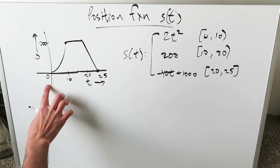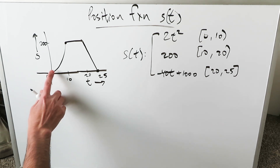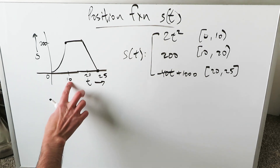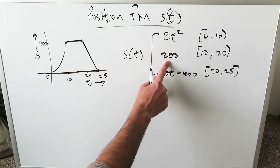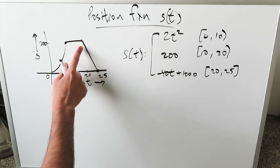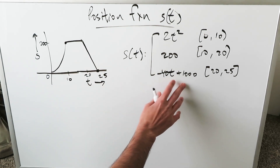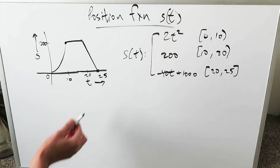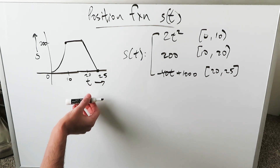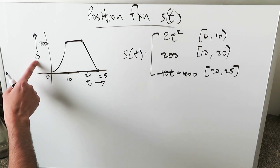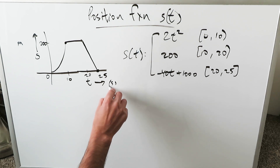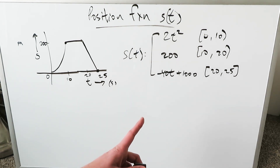Look right here at the graph. From 0 to 10 seconds, we have the function 2t squared. Then from 10 to 20 seconds, we have this horizontal line, a constant function of 200. And then from 20 to 25 seconds, you see minus 40t plus 1000. Time is the independent variable on the x-axis; position is the dependent variable on the y-axis — this can be in meters, and time here can be in seconds. The piecewise function clearly depicts what you have here.